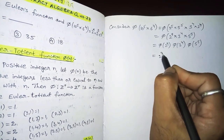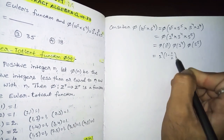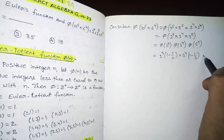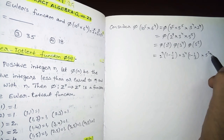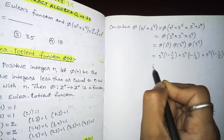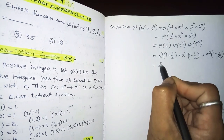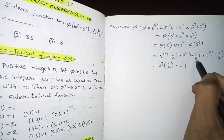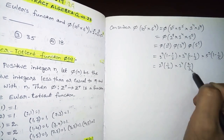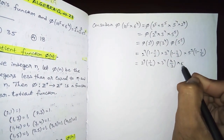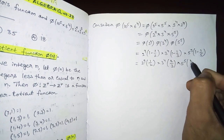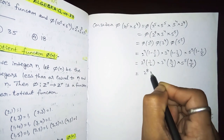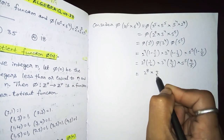By the prime power formula φ(p^k) = p^k × (1 − 1/p), this becomes: 2^9 × (1 − 1/2) × 3^4 × (1 − 1/3) × 5^5 × (1 − 1/5). Simplifying: 2^9 × (1/2) × 3^4 × (2/3) × 5^5 × (4/5).